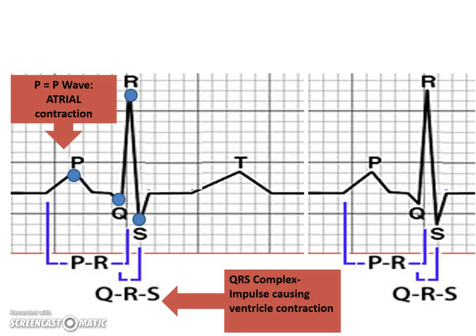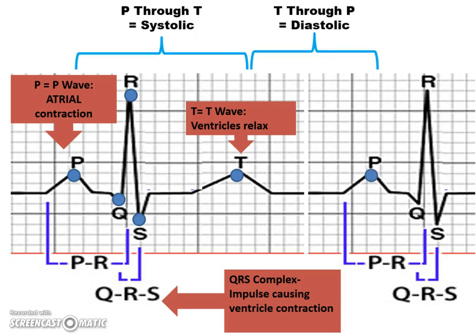The QRS complex is whenever the ventricles are contracting — Q, R, and S represent ventricular contraction. The T-wave is when the ventricles are relaxing or repolarizing. You'll need to know each portion of this EKG and be able to identify what each letter — P, Q, R, S, or T — is responsible for. P through T is our systolic phase when measuring blood pressure, and T through the next P — the beginning of the next contraction — is considered our diastolic phase, when the heart is relaxing and refilling with blood.